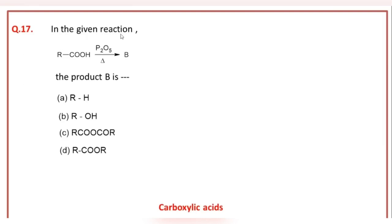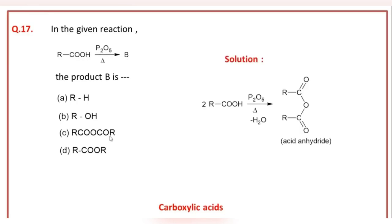In the given reaction, RCOH on treatment with P2O5 and heat gives product B. The correct answer option of this question is C.